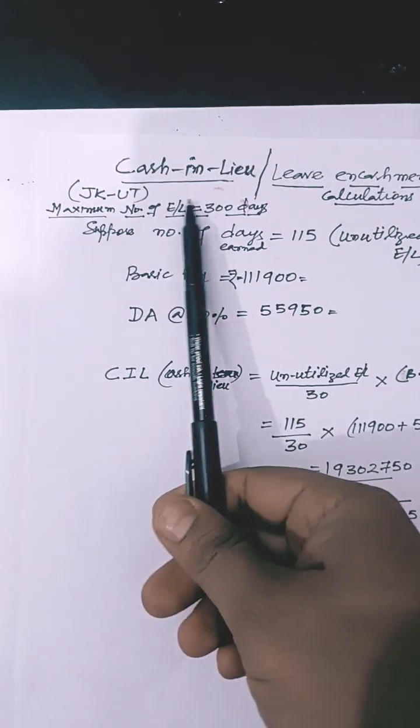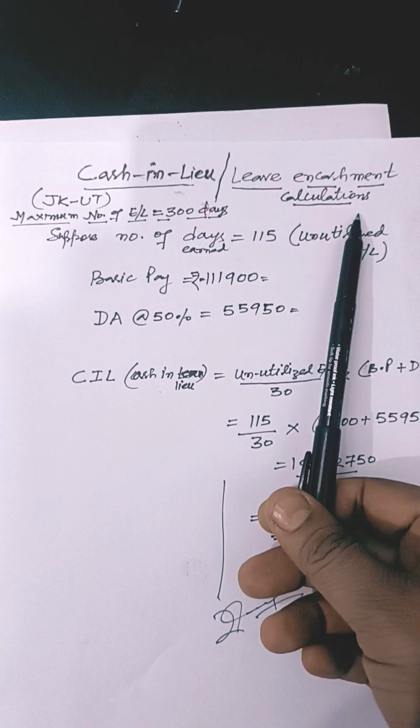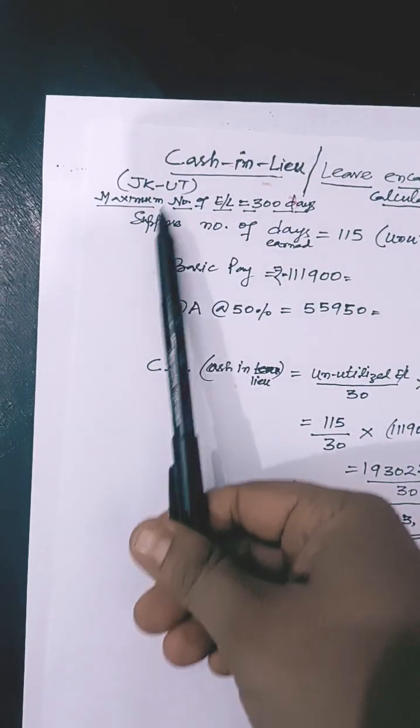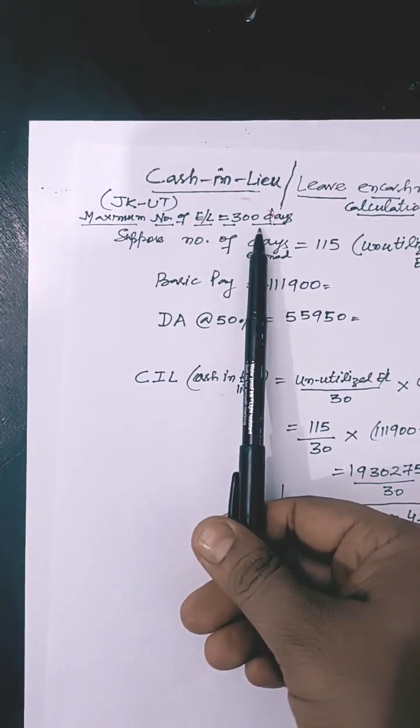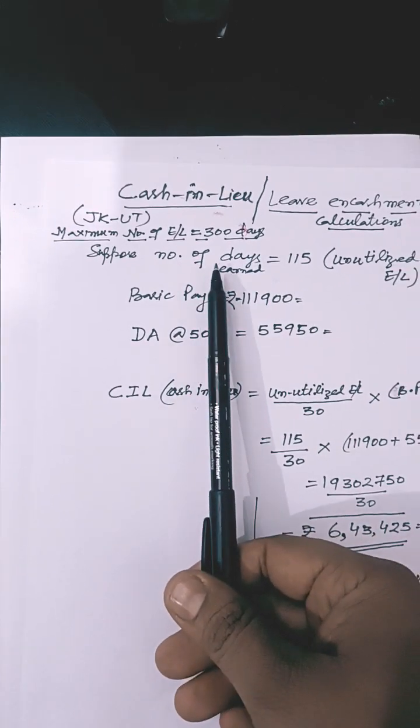Hello students, welcome to my channel. Today we'll learn how to calculate the amount of leave encashment. In JKUT, maximum number of earned leave is equal to 300 days that we can earn.